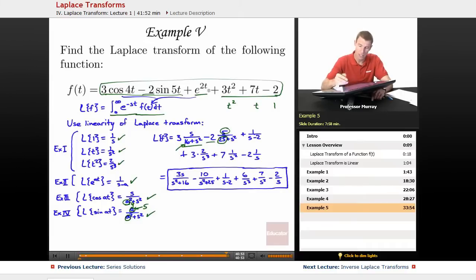e to the 2t, my a was 2 there, so plug that in there as 2 and I get 1 over s minus 2. And then t squared gives us Laplace transform is 2 over s cubed. So there it is there. Laplace transform of t and the Laplace transform of 1.